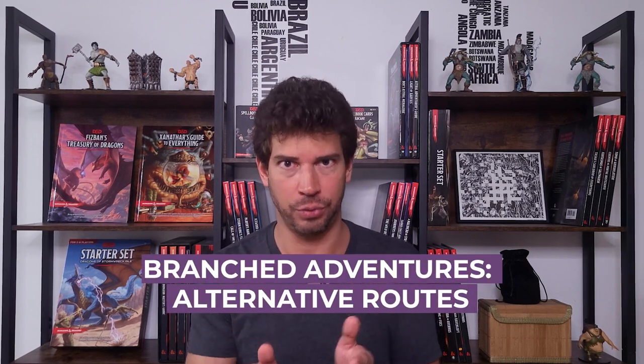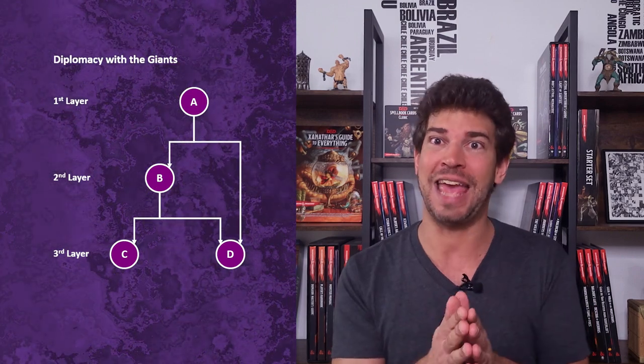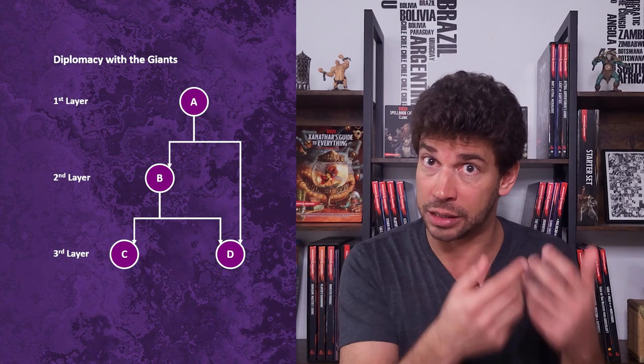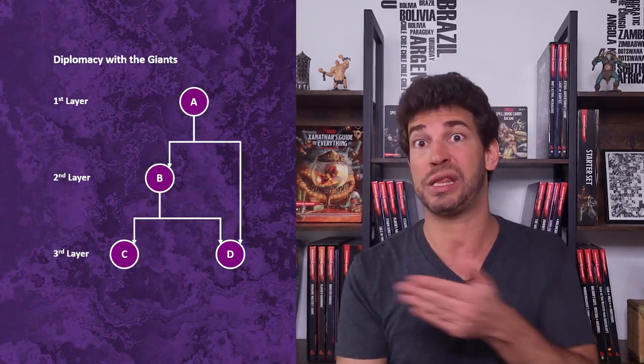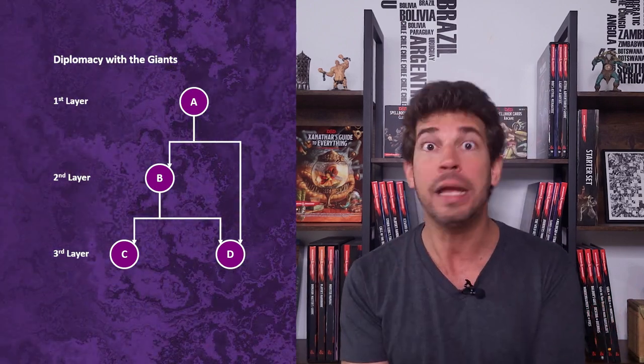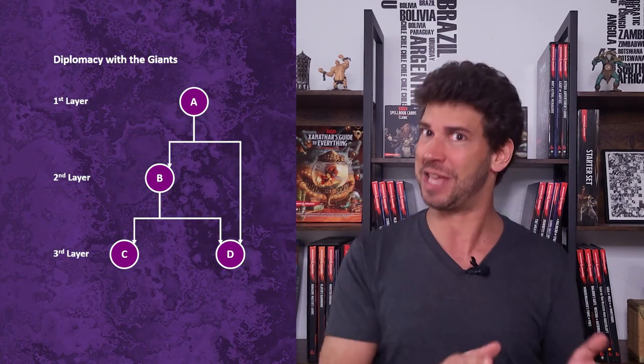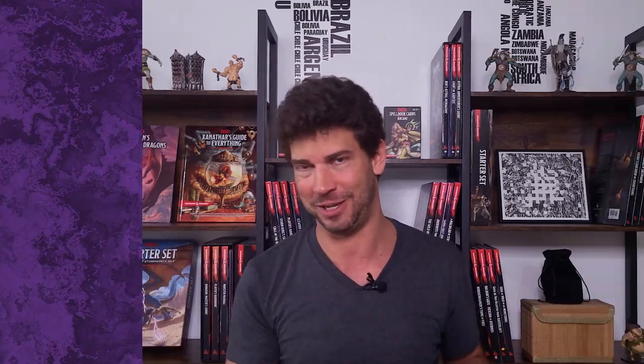My diplomacy with the giants quest is an example of a branched adventure with alternative routes. The initial encounter allows players to engage in dangerous diplomatic talks with the giants. If they do, they engage in encounter B in the second layer, and if they succeed in negotiating the giants' alliance, they unlock encounter C in the third layer. If they fail, the only option is to move ahead to the siege without the giants — I'm calling that encounter D. It's similar to encounter C, except players don't have the giants' help. Likewise, if players opt not to engage with the giants, they move directly to the same encounter D. The great benefit of alternative routes like that is providing all that freedom: players can choose where they want to go, they are rewarded for taking the risk and succeeding, and if they fail in one encounter, there is an alternative route for them to still succeed in the adventure.